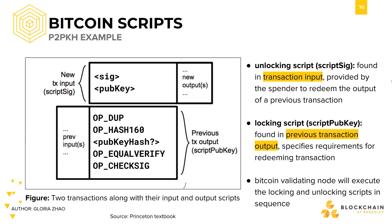On the other hand, locking scripts are the scripts that are found in previous transaction outputs. The locking scripts specify the requirements for redeeming a UTXO. This essentially locks down the UTXO so it can only be spent by whoever can unlock it. In our pay-to-pubkey-hash example, the locking script requires that users who want to spend from a previous transaction output must prove that they possess the private key that hashes to a specific address. For this reason, the script is called script-pubkey.